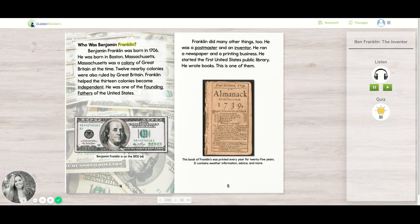Who was Benjamin Franklin? Benjamin Franklin was born in 1706 in Boston, Massachusetts. Massachusetts was a colony of Great Britain at the time. Twelve nearby colonies were also ruled by Great Britain. Franklin helped the 13 colonies become independent. He was one of the founding fathers of the United States.